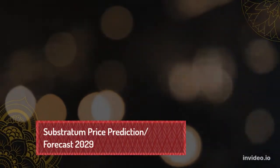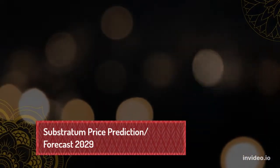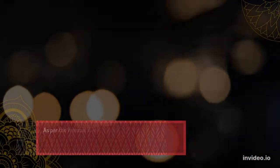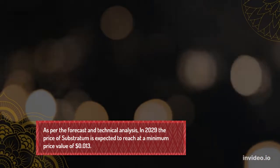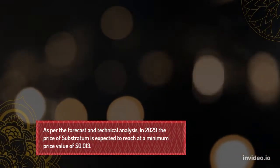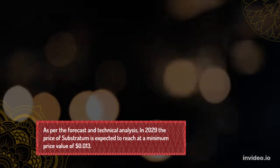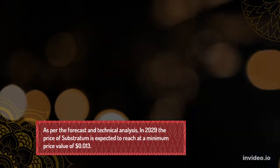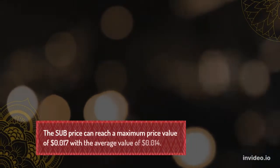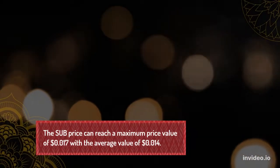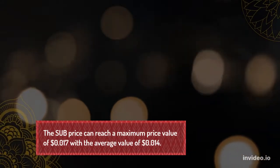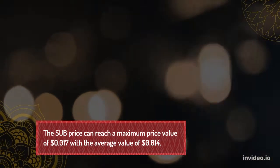Sub-Stratum Price Prediction and Forecast 2029: As per the forecast and technical analysis, in 2029 the price of Sub-Stratum is expected to reach a minimum price value of $0.013. The Sub-Stratum price prediction maximum is $0.015 with an average value of $0.014.